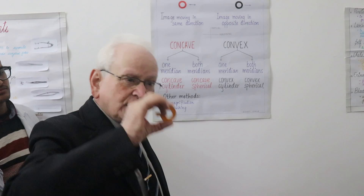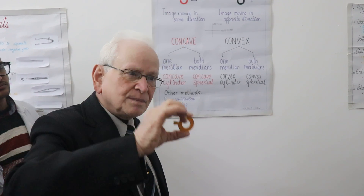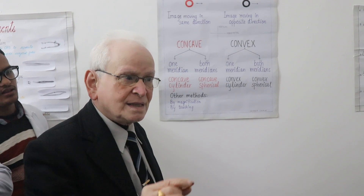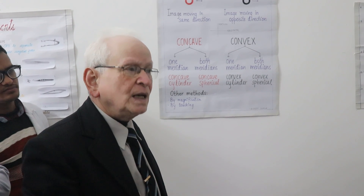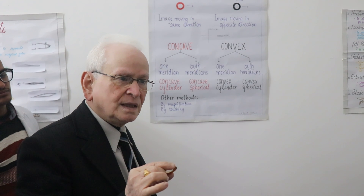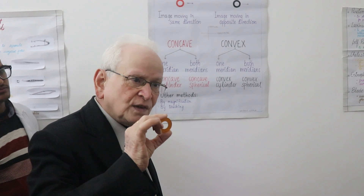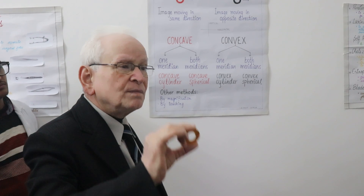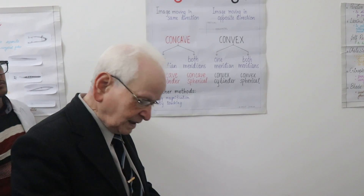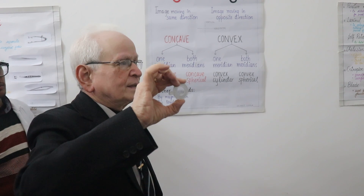If the image is moving in both meridians — that is vertical as well as horizontal — then it is a spherical lens. If movement is only in one direction, then it is cylindrical. The same applies in cases of convex lenses.